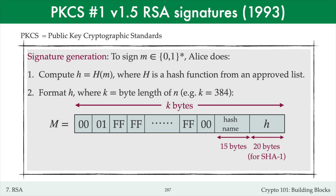The next byte 01 is a version number. The reason for the string of ff bytes is to ensure that the padded hash value capital M is a large integer whose bit length is close to that of n. This prevents the chosen ciphertext attack that I mentioned is effective on the basic RSA signature scheme. The reason for the 00 byte after the string of ff bytes is to enable someone parsing the bytes of the padded hash value from left to right to know where the padding ends. Alice then computes the eth root S of the padded hash value M by raising M to the power of her private key D modulo N. Alice's signed message is comprised of the message M and the signature S.